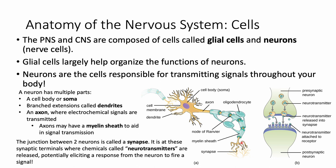Neurons communicate with each other at areas called synapses. At synaptic terminals, chemicals called neurotransmitters are released and bind to the next neuron, potentially causing it to fire and release an electrochemical signal down its axon. That signal is passed from neuron to neuron, causing reactions at distal parts of the body or sending signals back to the central nervous system.